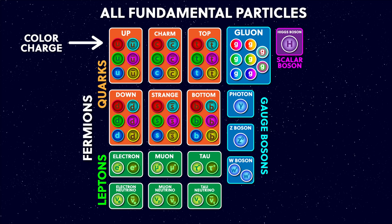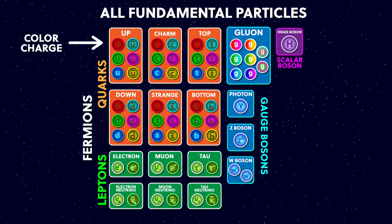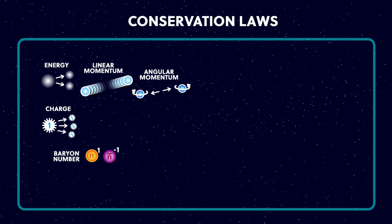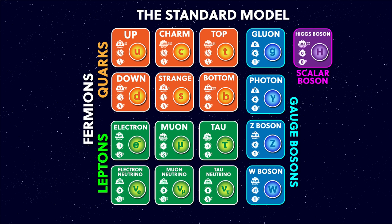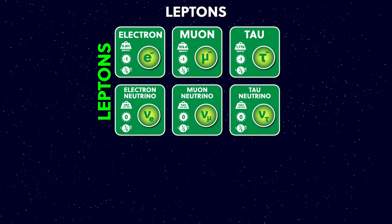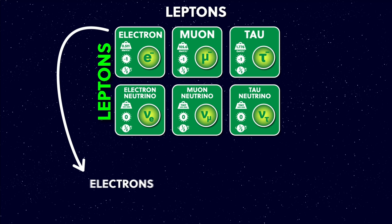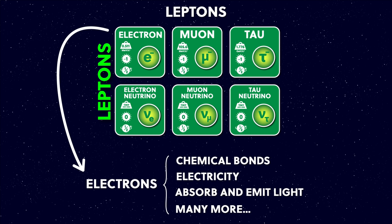So that completes my description of the quarks. We add conservation of baryon number and conservation of colour charge to the chart. Now let's move on to the other half of the fermions — the leptons. Here they all are, and here's the most famous one: the electron, which is the hardest working particle responsible for chemical bonds, electricity, atoms emitting and receiving photons of light, amongst others. Modern society is entirely built on our ability to get electrons to do what we want them to do.